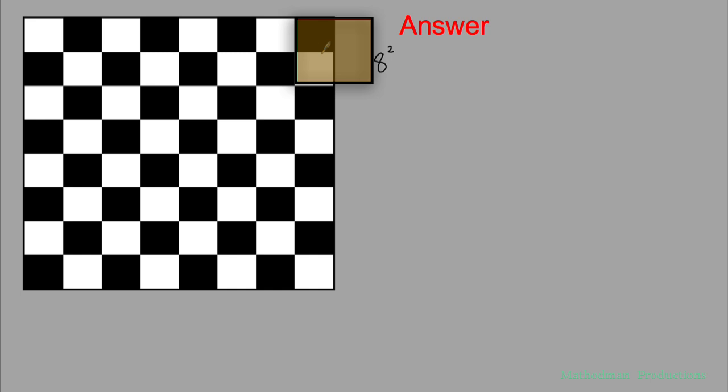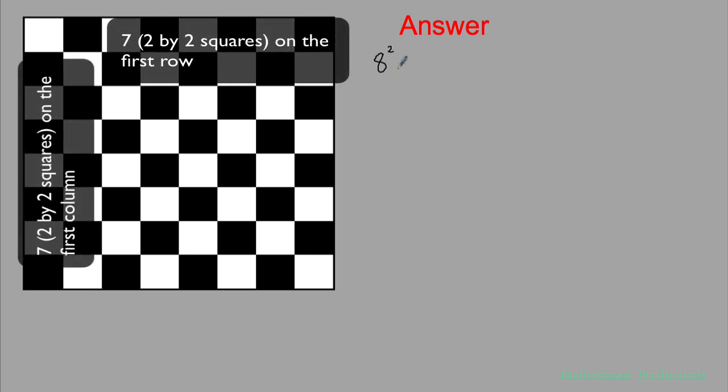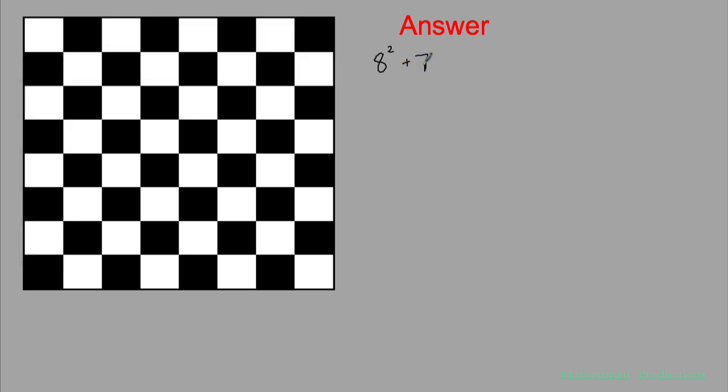And if I do the same pattern, there are seven in the first column: one, two, three, four, five, six, seven. Seven by seven is 49, so I can add seven squared to this count.